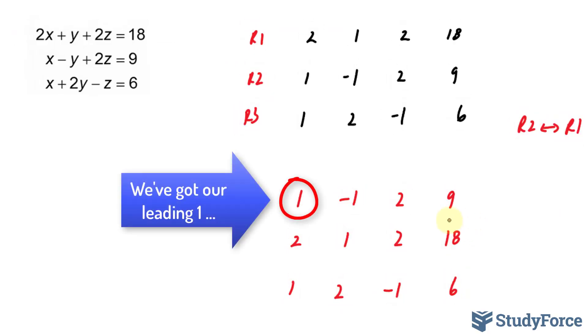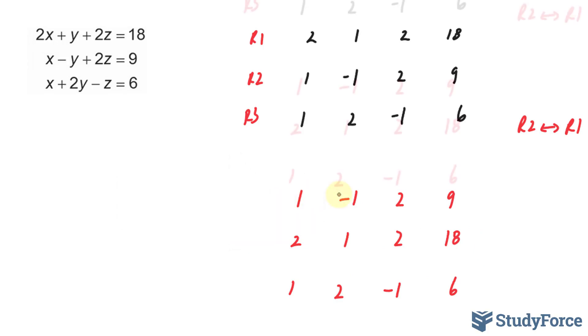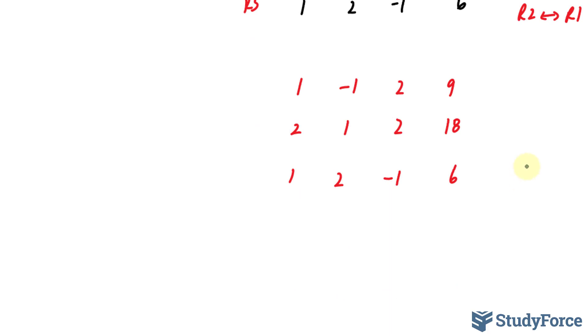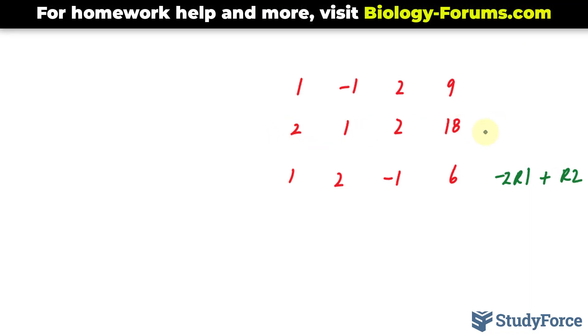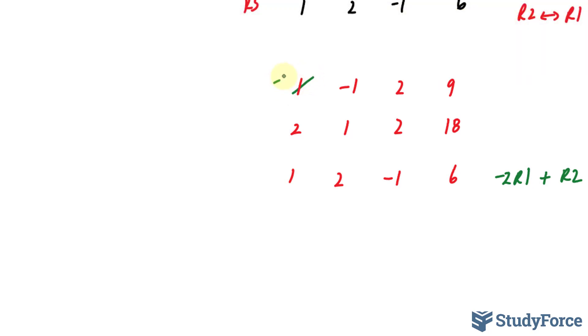The next thing that I'll do is replace row 2 by multiplying row 1 by negative 2 and adding it to row 2. Let's document that. So I'll multiply row 1 by negative 2 and add it to row 2, and that will replace what's currently as row 2. Multiplying this by negative 2, we end up with negative 2. This becomes positive 2. This becomes negative 4, and negative 18.